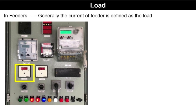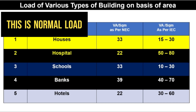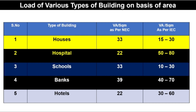The load of various buildings as per NEC and IEC standards are: for a house, as per NEC, Volt-Amperes per square meter is 33, and as per IEC it is 15 to 30. For a hospital, it is 22 (NEC) and 50 to 80 (IEC). For schools, it is 33 (NEC) and 10 to 30 (IEC). For banks, it is 39 (NEC) and 40 to 70 (IEC). For hotels, it is 22 (NEC) and 30 to 60 (IEC).